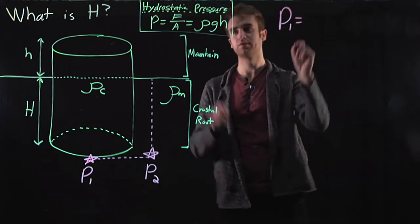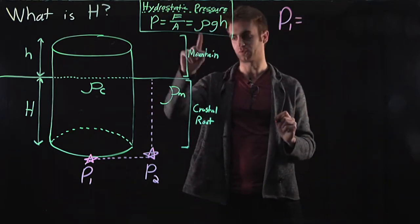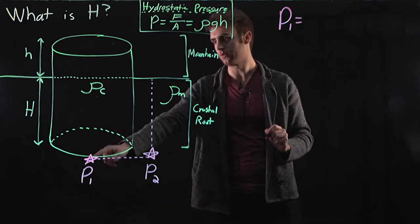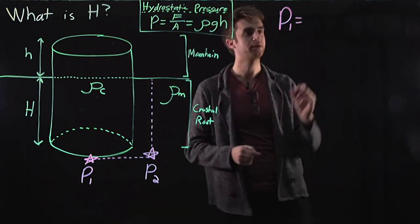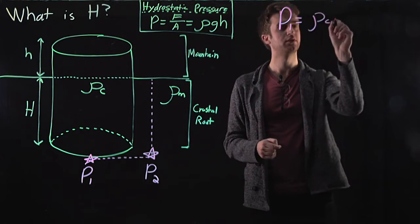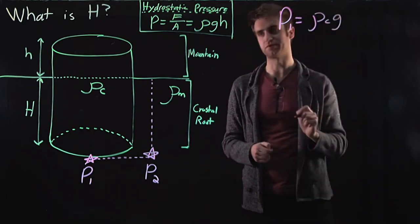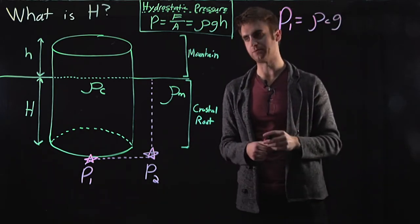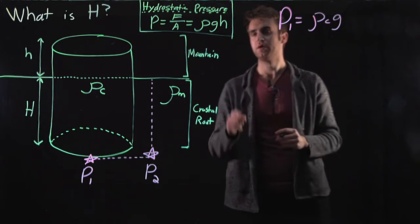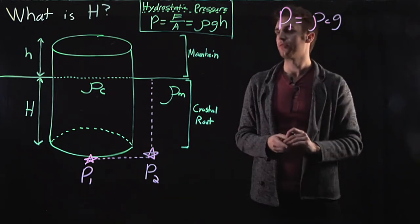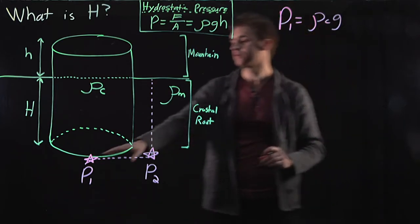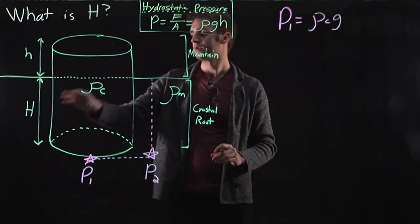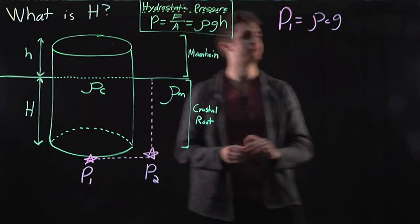p1 equals, well, the density that we have to worry about is just rho c, because all of the overlying material is crustal rock. So rho c times g, our gravitational acceleration, here on earth that's about 9.8 meters per second squared. And h, well, the height of all of the overlying material, again,